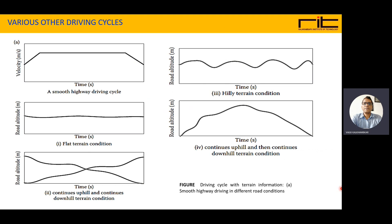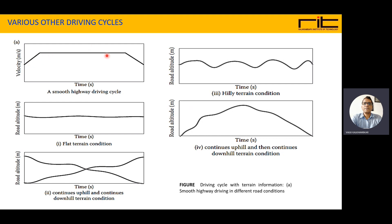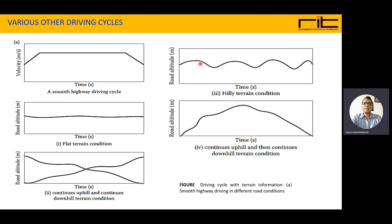Various driving cycles considering geographical locations are discussed here, focusing on smooth highway driving under different road conditions. Though it appears smooth, considering road conditions it may have a flat terrain with slight variations. Continuous uphill and continuous downhill terrain conditions can also be seen — though it may seem flat, it still involves downhill and uphill segments. The third example is hilly terrain conditions, with continuously alternating ups and downs.